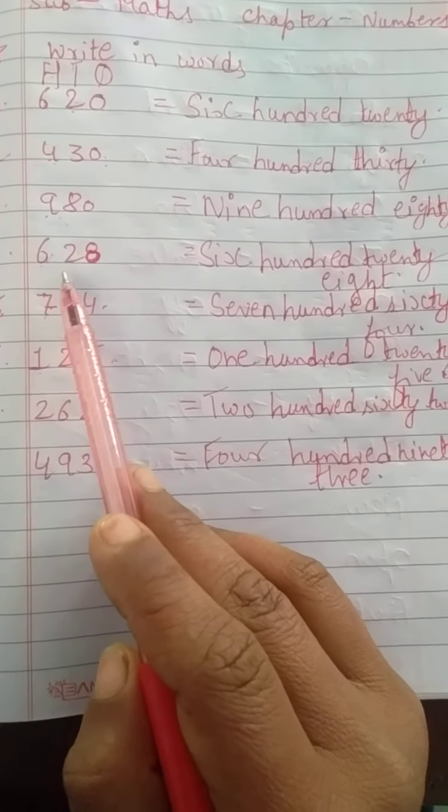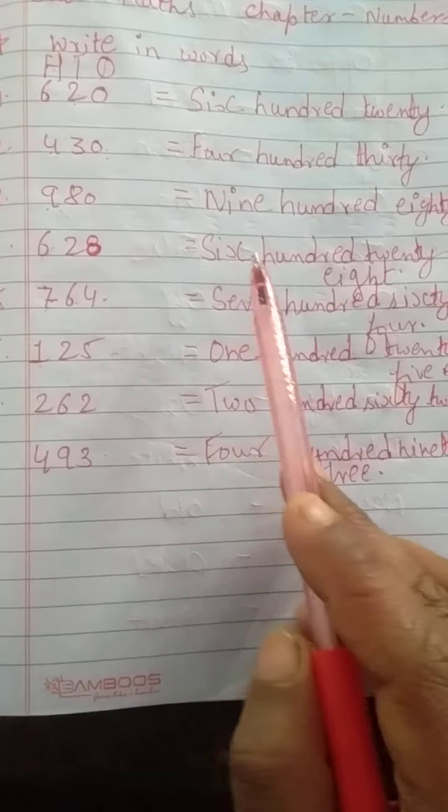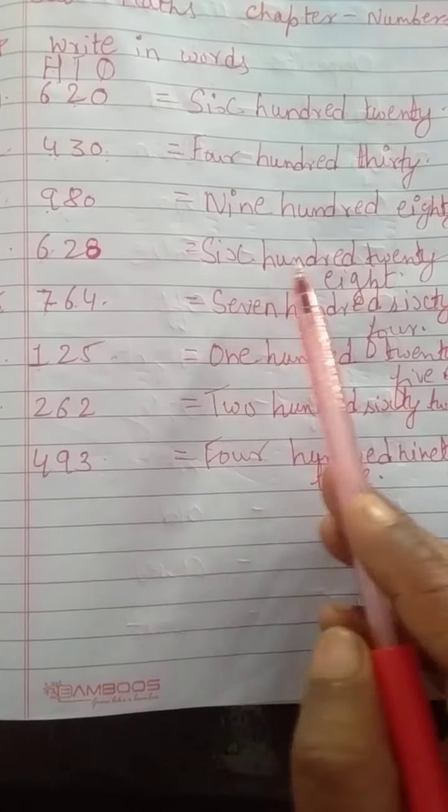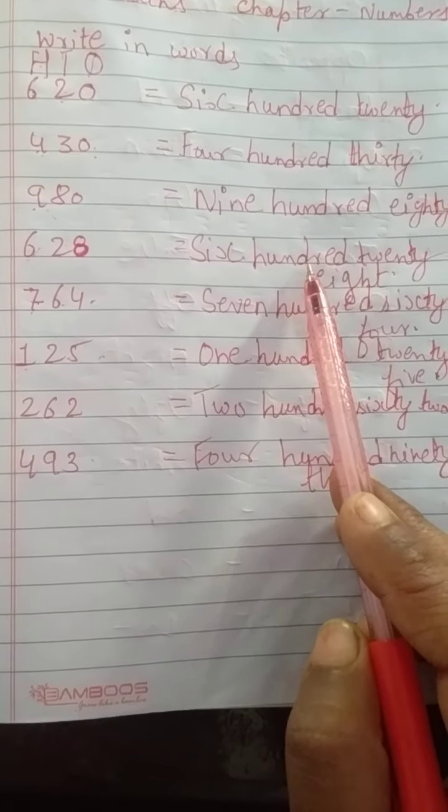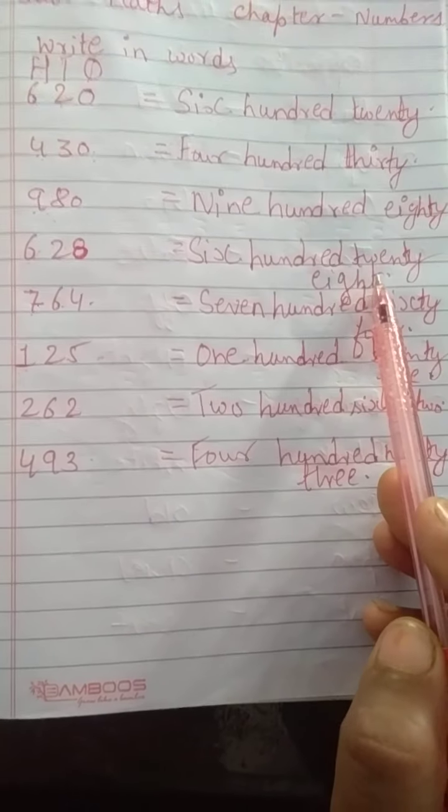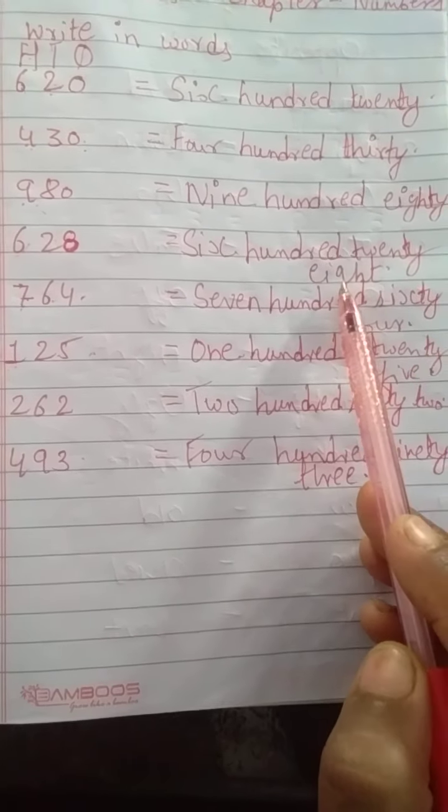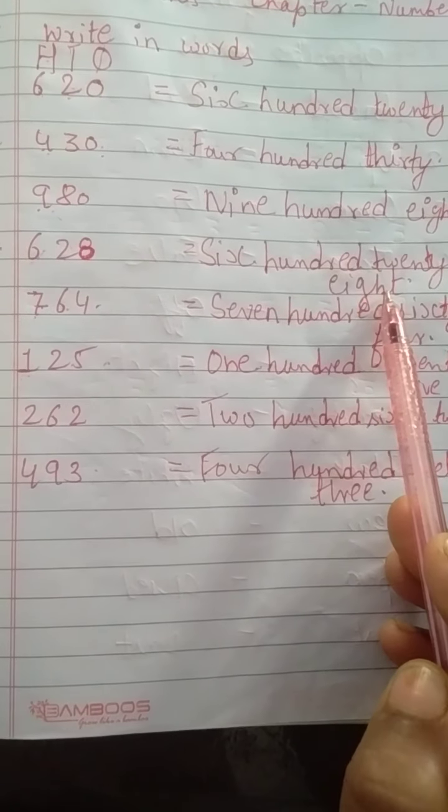Next is 628. So, we have to revise once again. 628. S-I-X 6 H-U-N-D-R-E-D 100. T-W-E-N-T-Y 20 and the spelling of 8 is E-I-G-H-T.